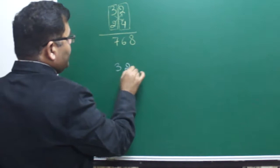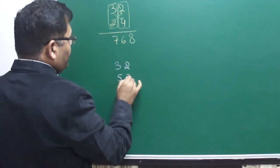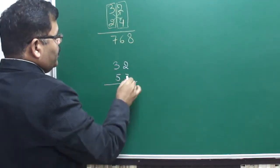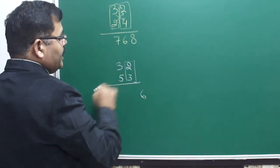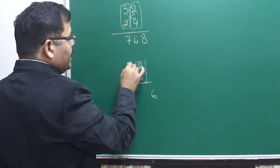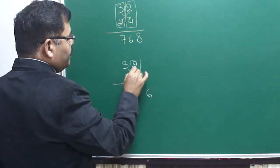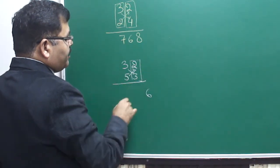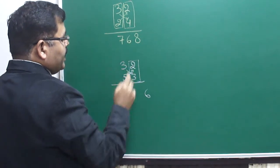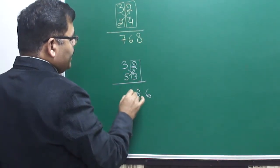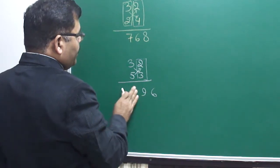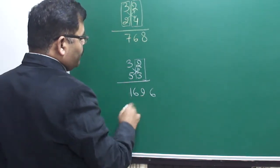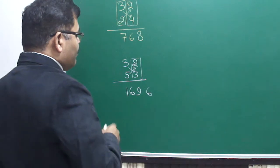Now I will take another example. Suppose 32 x 53. What to do? 3 x 2s are 6. And now first I have taken the vertical product, then I have to take the cross product and sum of them. So 3 x 3 is 9 plus 10 is 19. 19, write 9 carry 1. 5 x 3 is 15 and 1, 15 and 1 is 16. So this is 1696. That will be the answer.